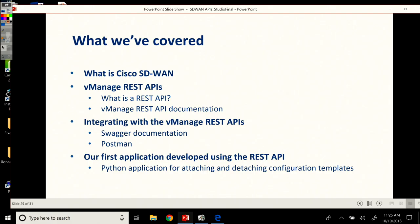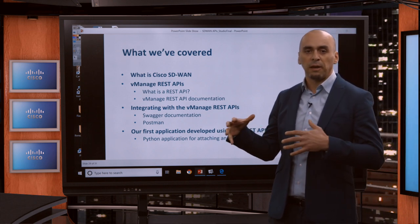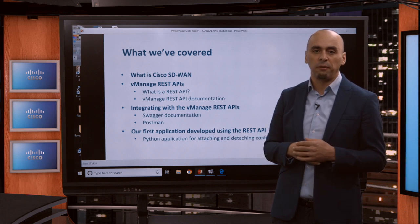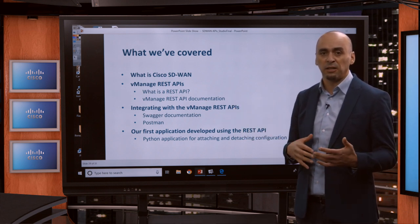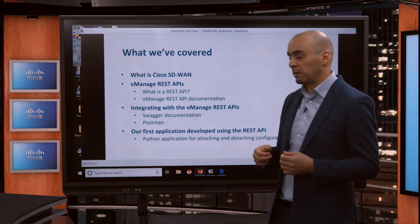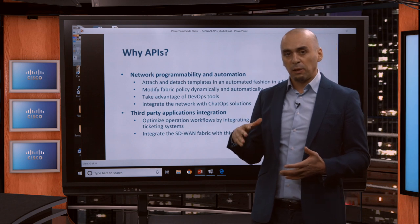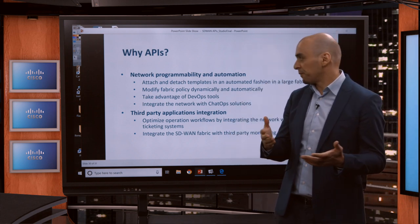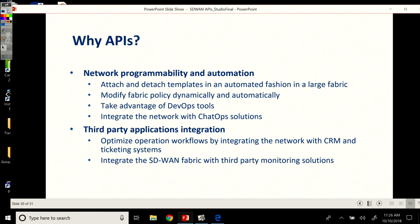The next step was our first application developed using the REST API — our Python script. We went in great detail over all the options: from device list, to template list, to attaching devices to a specific template. We've seen all the functions and all the libraries used. We looked at attach and detach functions that programmatically attach a template to a specific device in an automated fashion. That took us from no knowledge about what an API is to writing your first application and being ready to extend the platform and integrate it with other third-party applications.